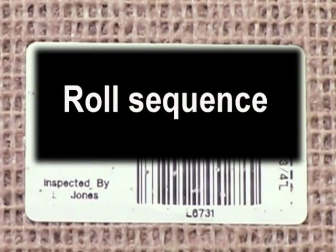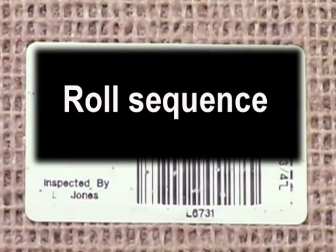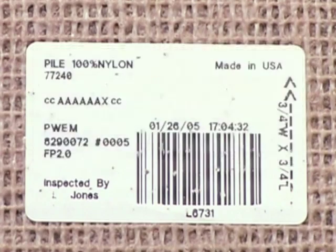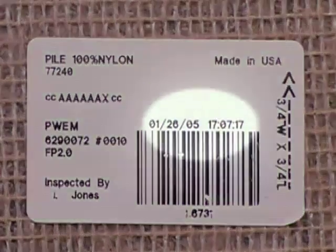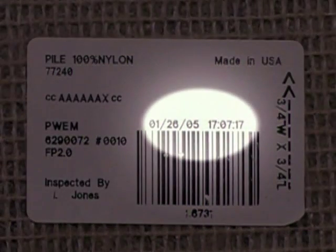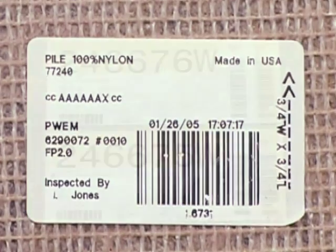All installations should be installed in roll sequence. Roll sequence is important because pattern length in sequence rolls will match better than rolls that are installed out of sequence. Also, the probability of side match or color difference at the seam is greatly reduced when the installation sequence is followed.